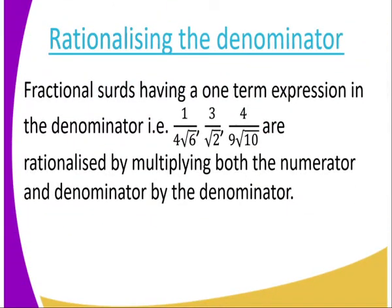We go to the next one. In a situation like this, when fractions have a one-term expression in the denominator — as in the examples shown — rationalize by multiplying both the numerator and the denominator by the denominator.